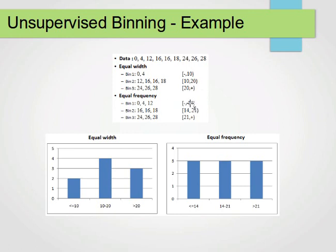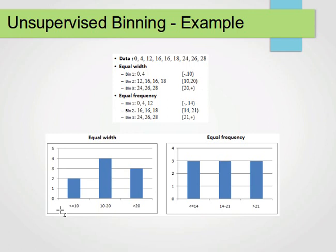The boundaries here are approximately 14 and 21. Note that parentheses mean the value is not included in that set, while square brackets mean the value is included. So 10 is included in the second bin, and 20 is not included in the second bin — it's included in the third bin.